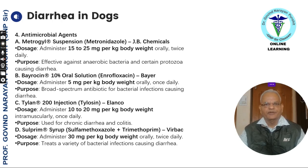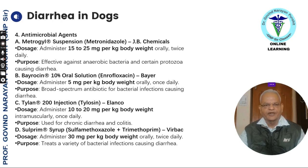Antimicrobial agents include metronidazole (Metrogyl suspension) 15 to 25 mg per kg body weight, enrofloxacin 10% oral solution 5 mg per kg body weight, Tylosin 10 to 20 mg per kg body weight intramuscularly, or Sulprim (containing sulfamethoxazole and trimethoprim) 30 mg per kg body weight orally twice daily. When administering sulfa drugs, ensure that sufficient water is provided to the animal.